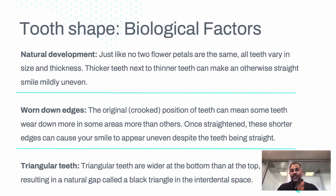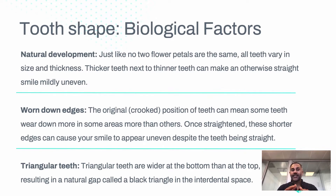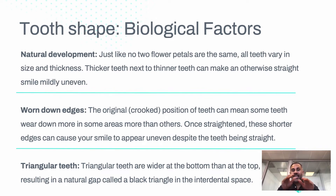If we think about lower or upper incisors, even a pair of teeth are not twins — they are sisters or brothers, so they're slightly different. Just like in nature, no two flower petals are exactly the same. All teeth vary in size and thickness, so a thicker tooth next to a slightly thinner tooth can give a slight variation, and that's normal.